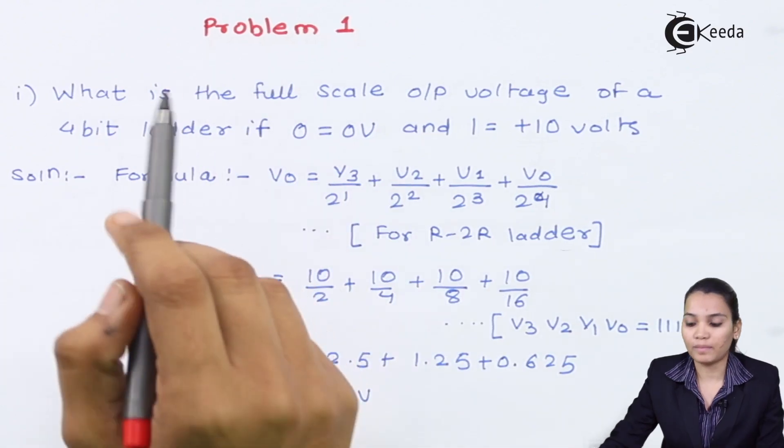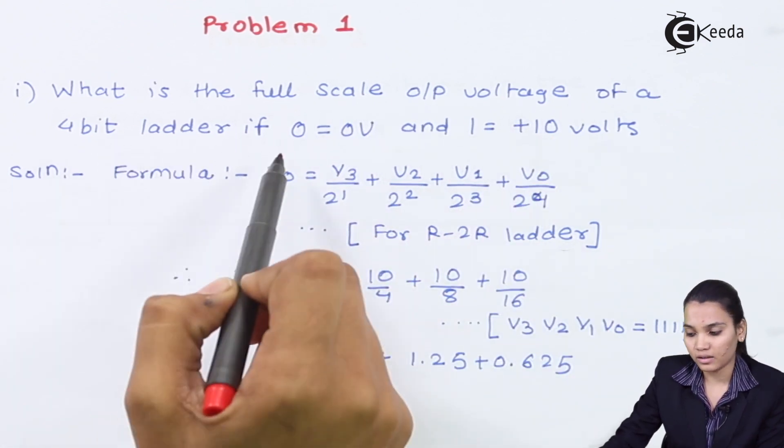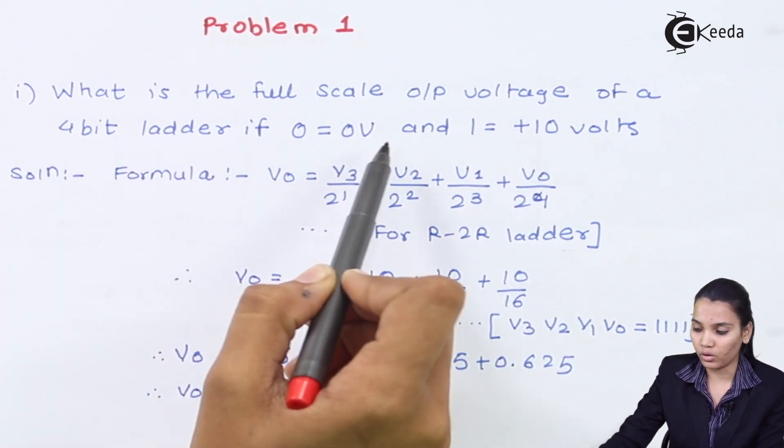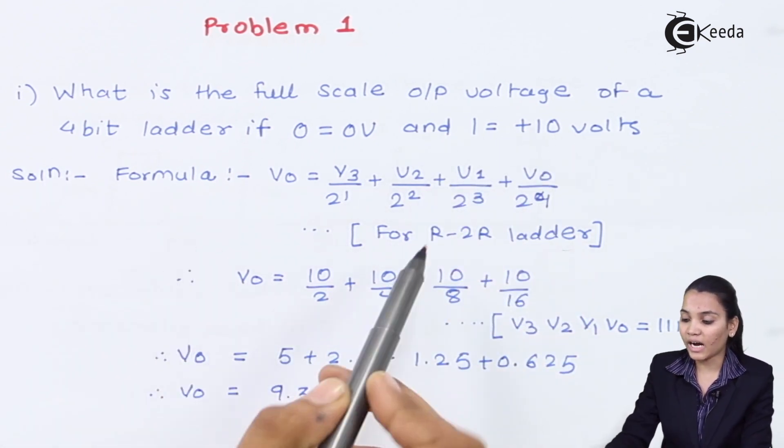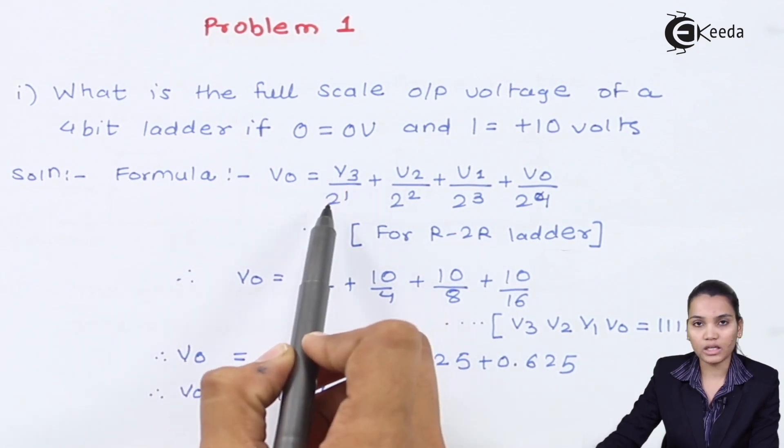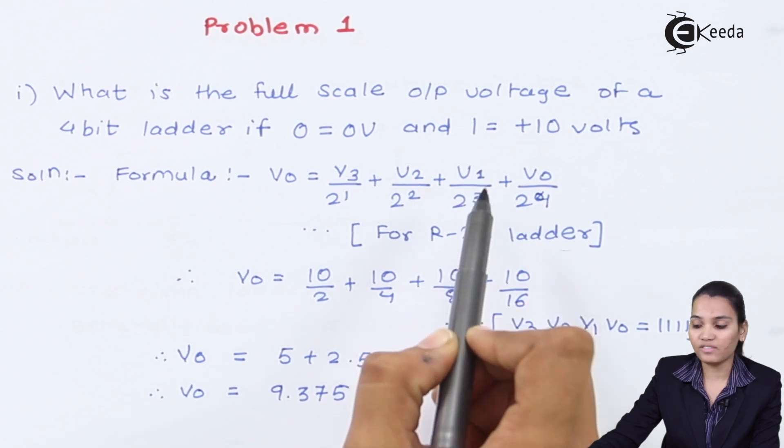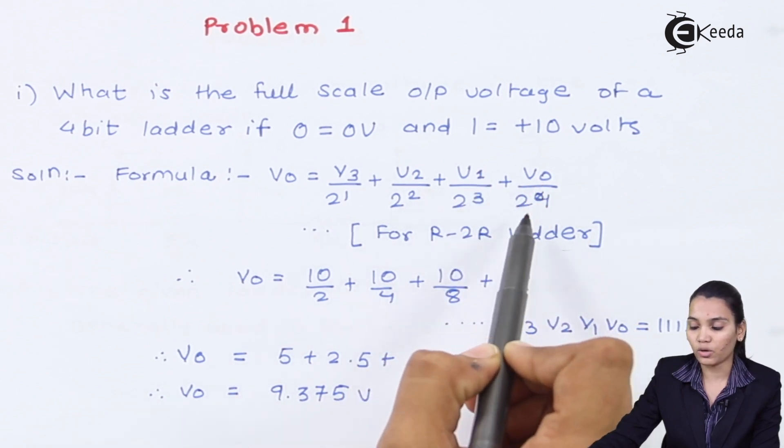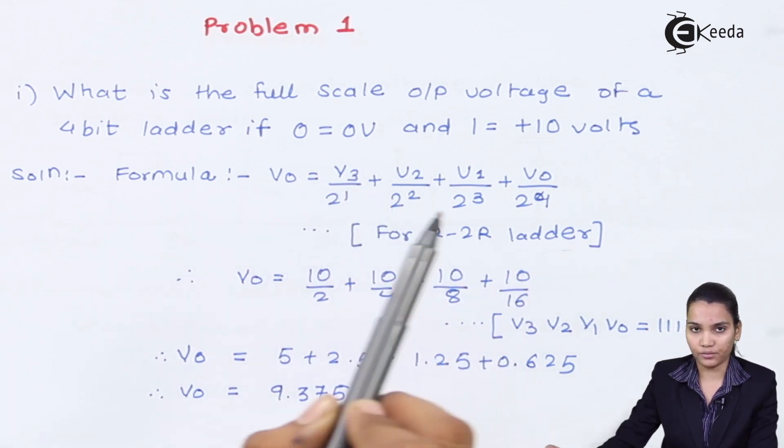This is problem number one. The question is: what is the full scale output voltage of a 4-bit ladder if 0 represents 0 volt and 1 represents 10 volt? We know that the R-2R ladder network formula is V0 = V3/2^1 + V2/2^2 + V1/2^3 + V0/2^4. This is the final output formula for the R-2R ladder network.